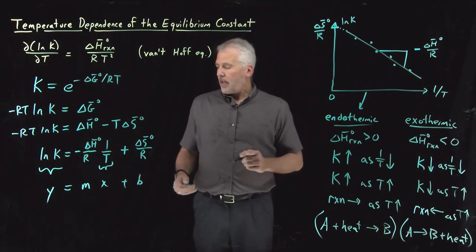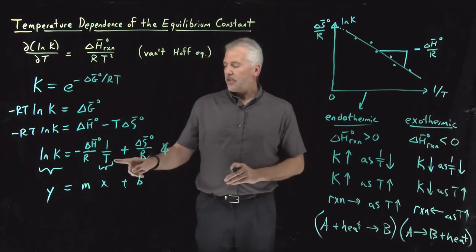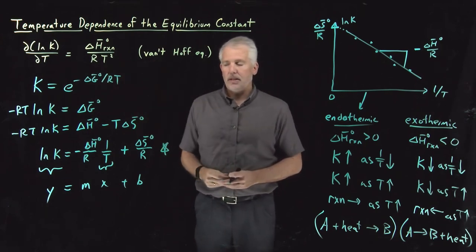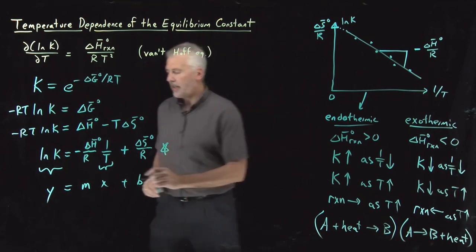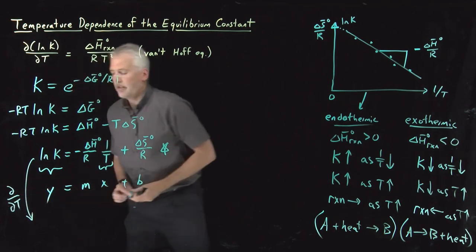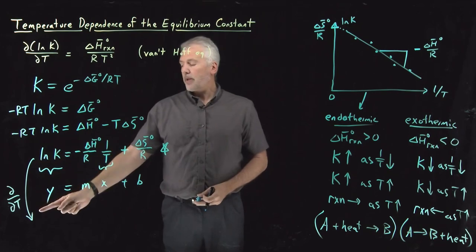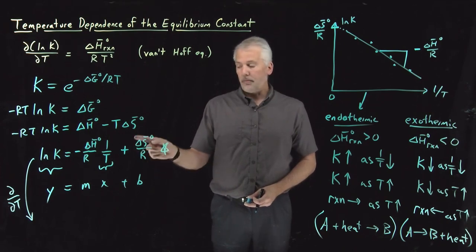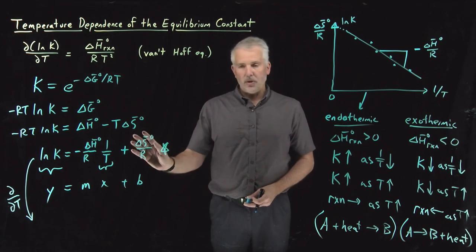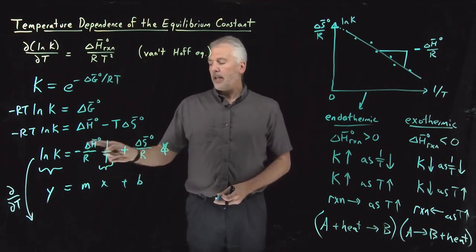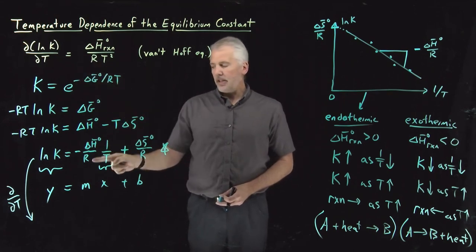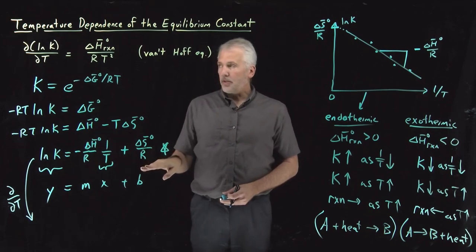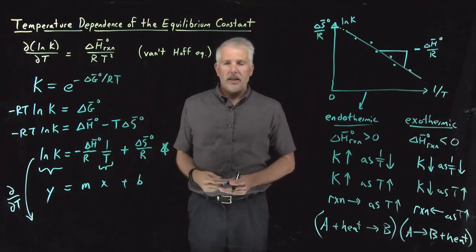I should point out that if we take the temperature derivative of this equation — log K = -ΔH/R · (1/T) + ΔS/R — the left side gives d(log K)/dT. On the right side, if entropy is approximately temperature-independent, the ΔS/R term vanishes, and the derivative of negative 1/T gives positive 1/T². So we recover: d(log K)/dT = ΔH/(RT²), which is the Van't Hoff equation. This is a second way of obtaining it, and we've now seen two different derivations.